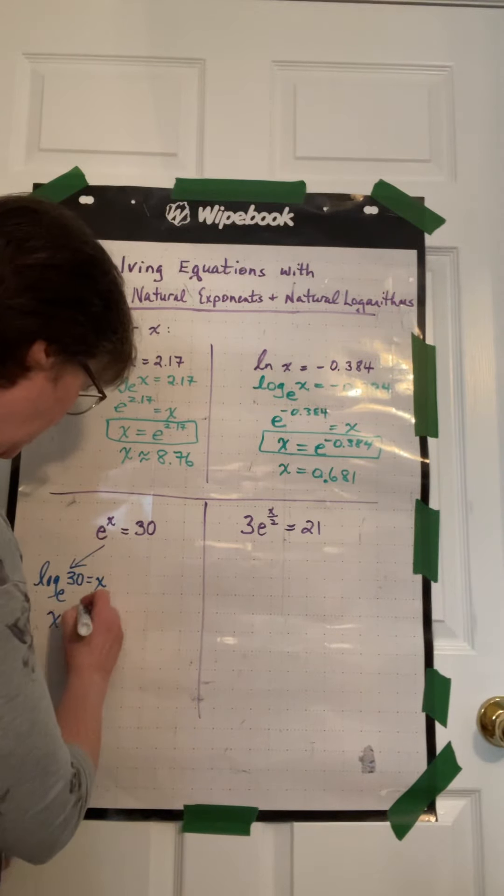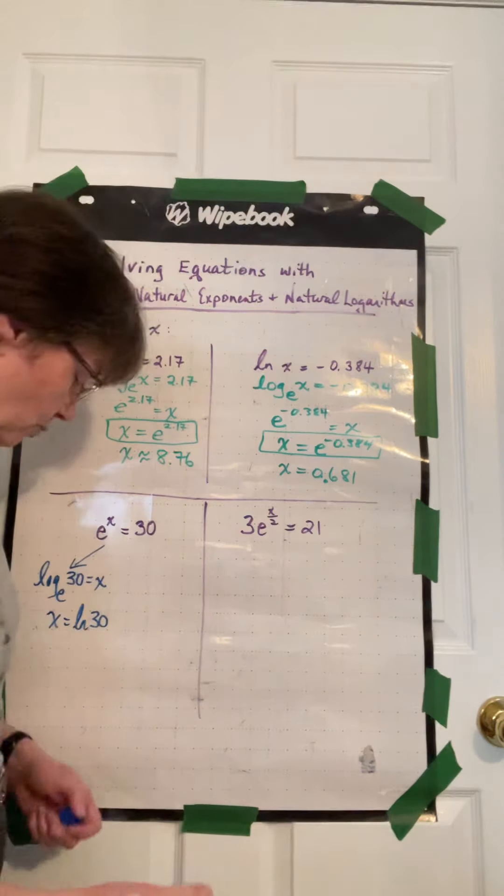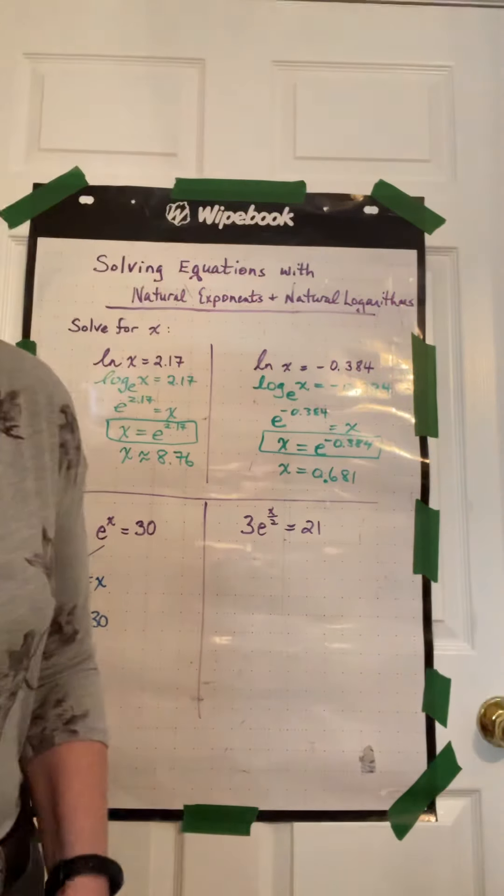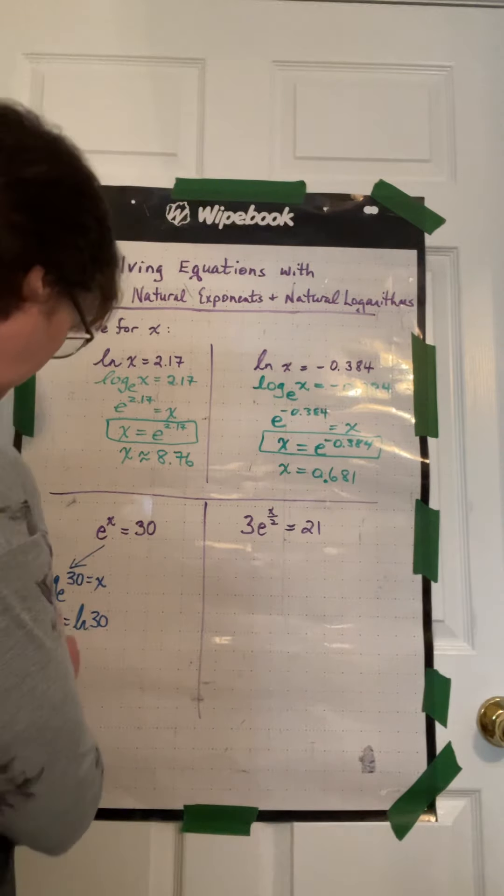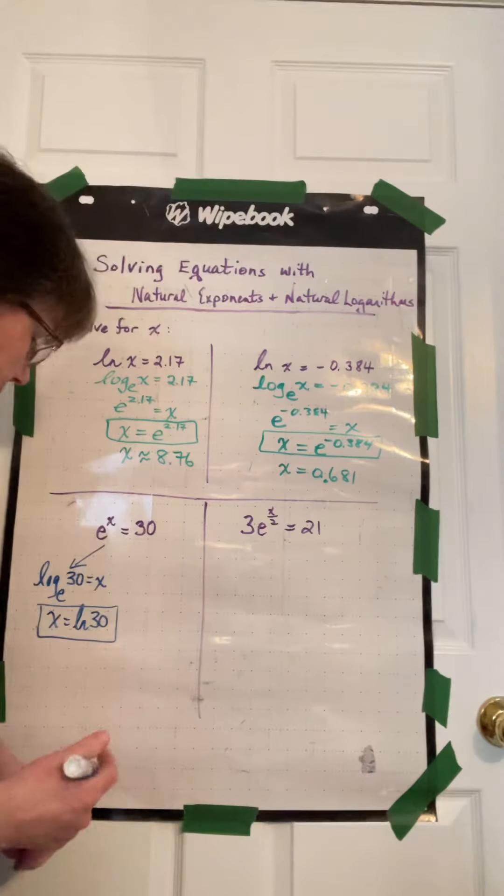So x is equal to ln 30. And that's a great answer. Again, we could poke that in our calculator to get the decimal number for it, but we can also leave it like this, which is a perfectly acceptable exact answer.